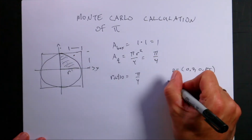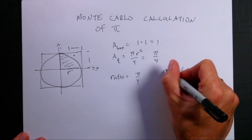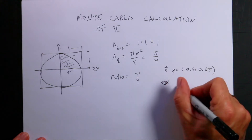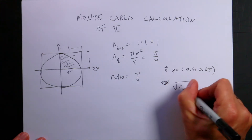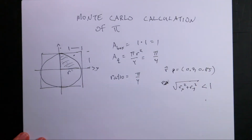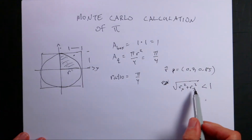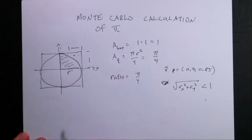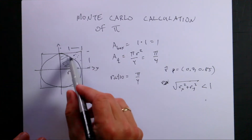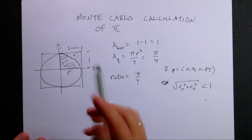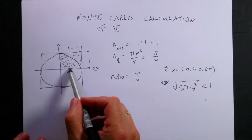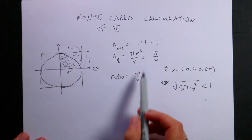If the vector r has a square root of rx squared plus ry squared that is less than 1, then it's in the circle. If rx squared plus ry squared is greater than 1, it's outside. So I'm going to get all these random points, and I can say whether each one is in the circle or not. Taking the ratio of random points in the circle to total random points should give pi over 4.